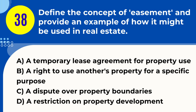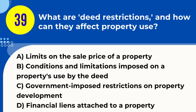Question 38. Define the concept of easement and provide an example of how it might be used in real estate. A. A temporary lease agreement for property use. B. A right to use another's property for a specific purpose. C. A dispute over property boundaries. D. A restriction on property development. Answer: B. Explanation. An easement is a legal right to use another's property for a specific purpose, even though they do not own it. For example, utility companies may have an easement to install and maintain utility lines, or a neighbor might have an easement to use a driveway that crosses another's property.